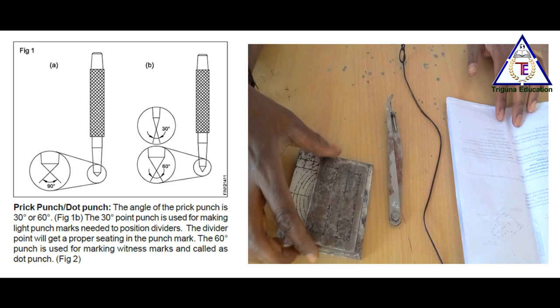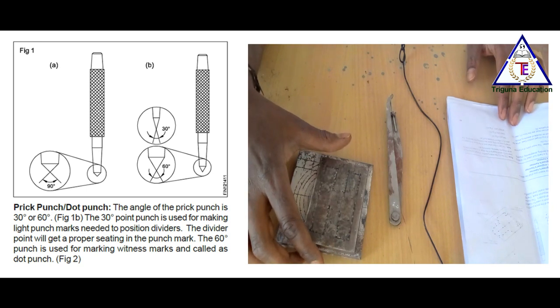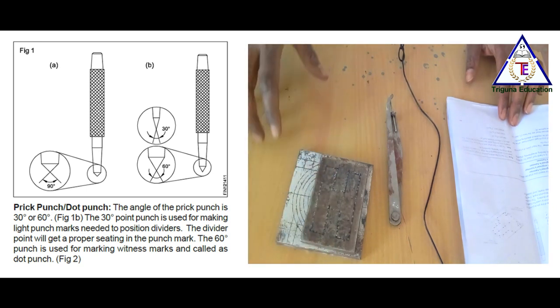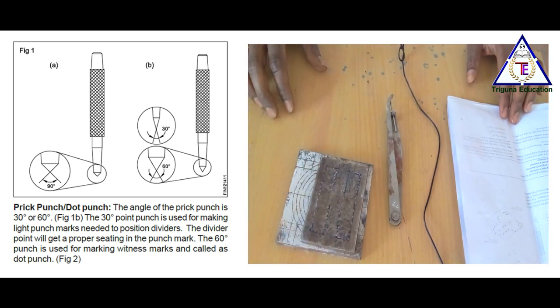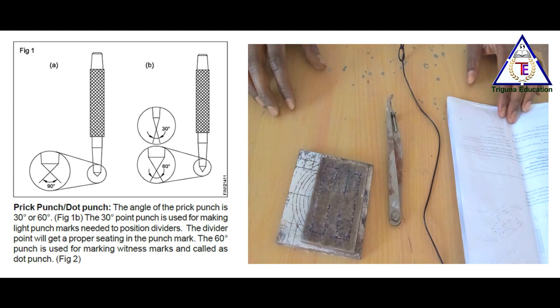There are two types of punches: the center punch and the prick punch. They are made of high carbon steel, hardened and ground.